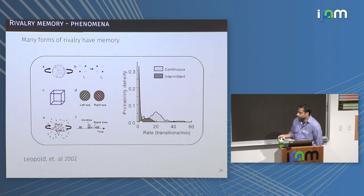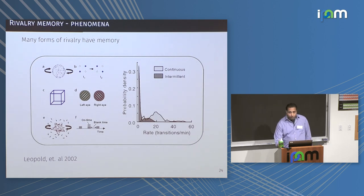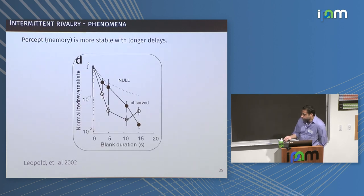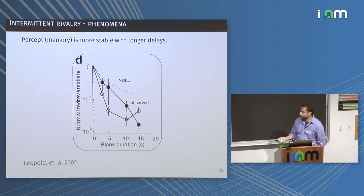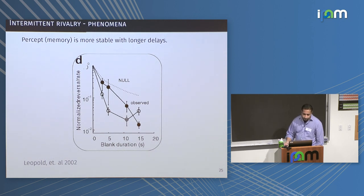When you introduce blank delays between rivalry periods, the transition rate massively slows. Even more interesting — and counterintuitive — is that the longer the delay, the more stable the percept becomes. Unlike normal memory where longer delays mean more forgetting, in rivalry the reversal rate decreases as you increase blank duration, so it becomes more stable. We need to be able to explain that.